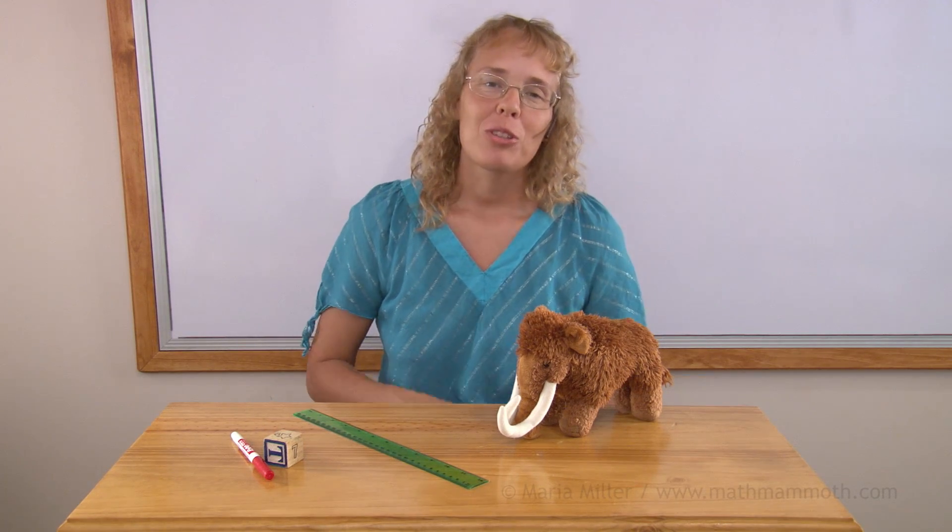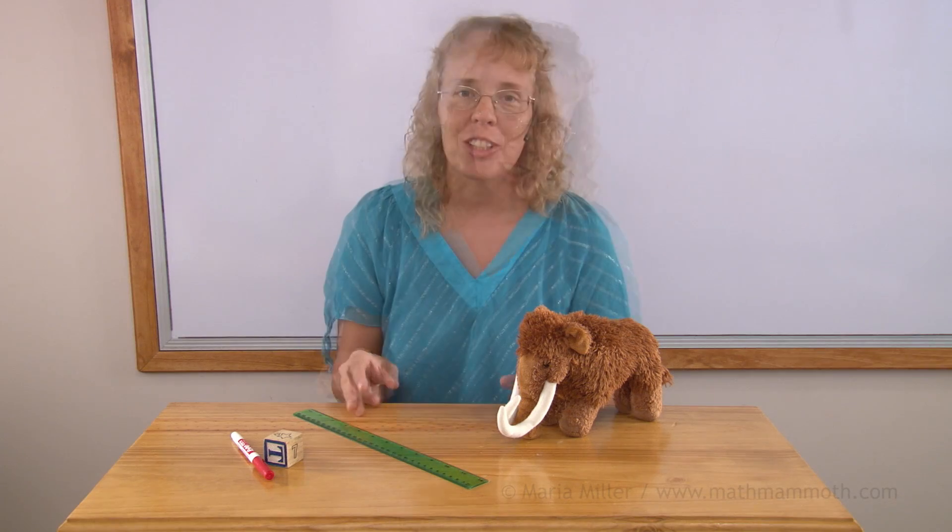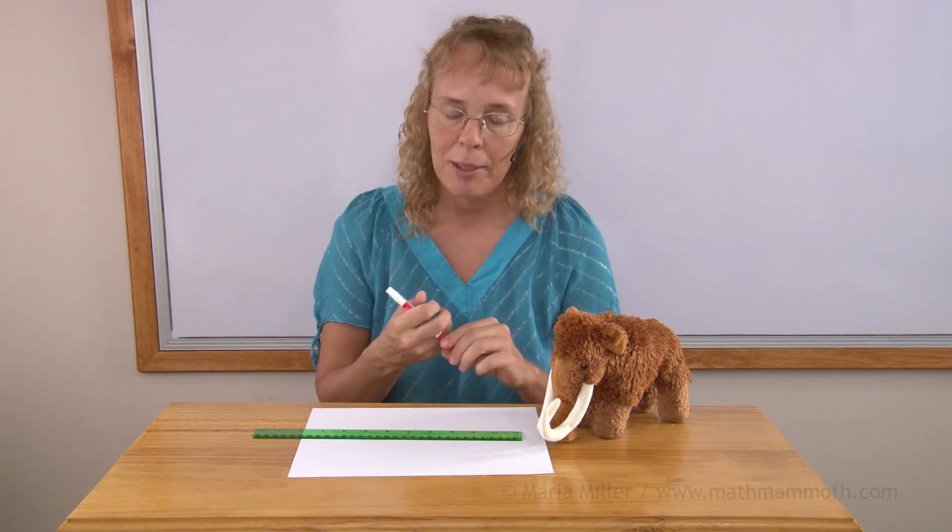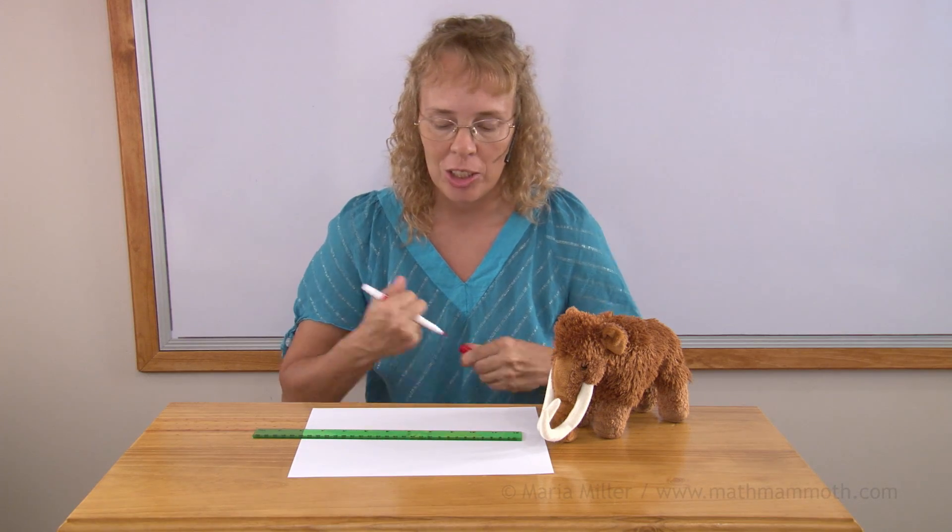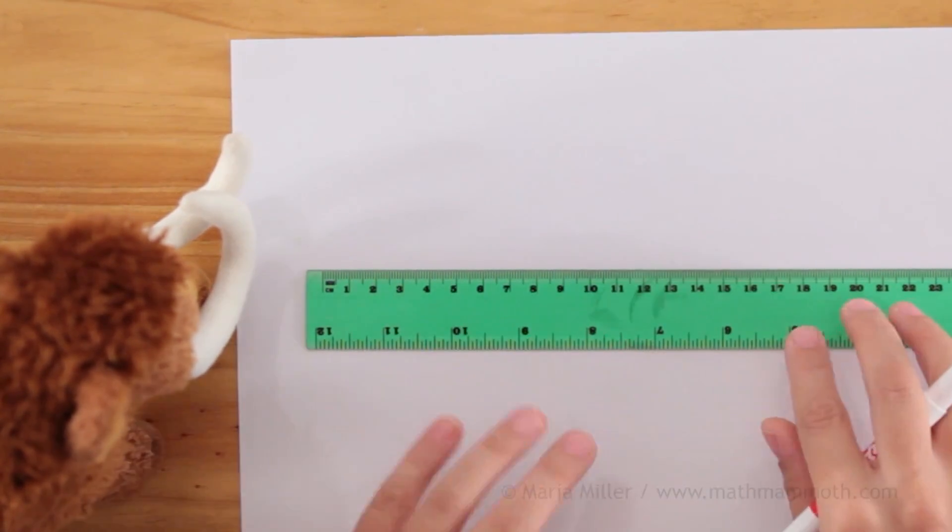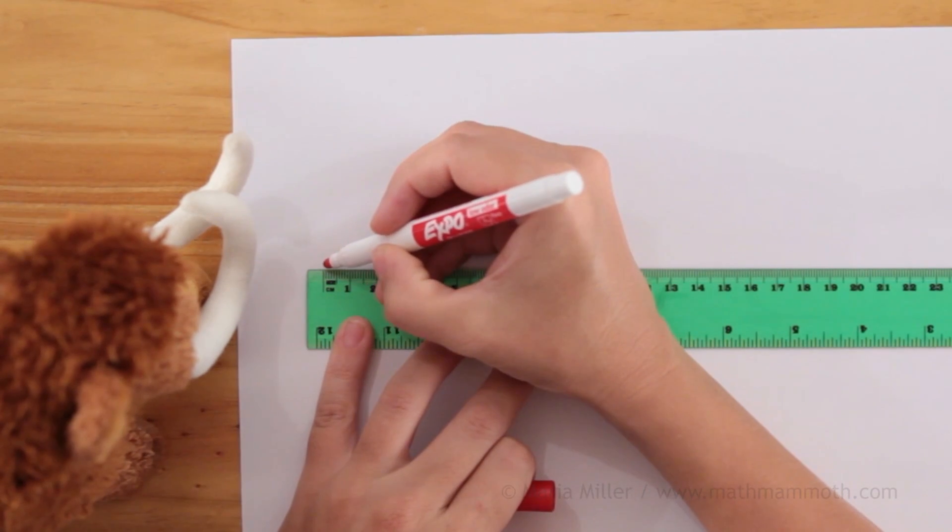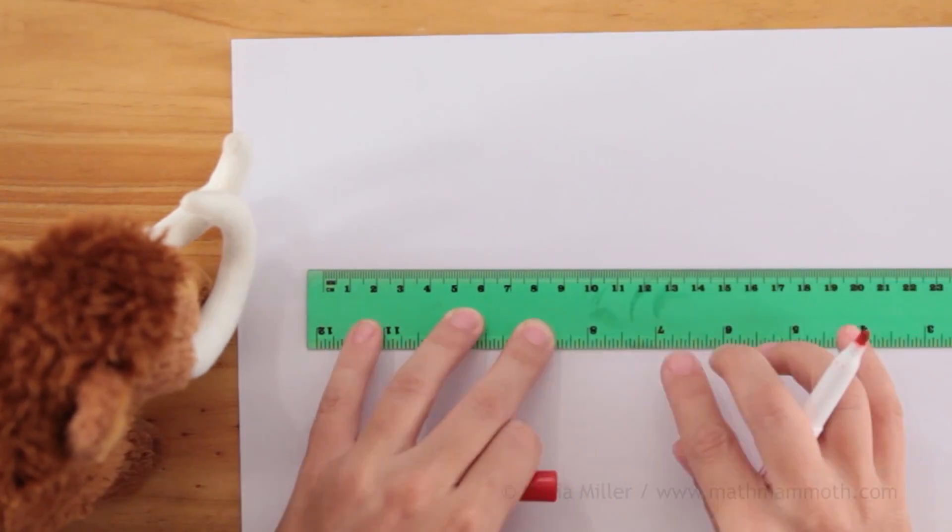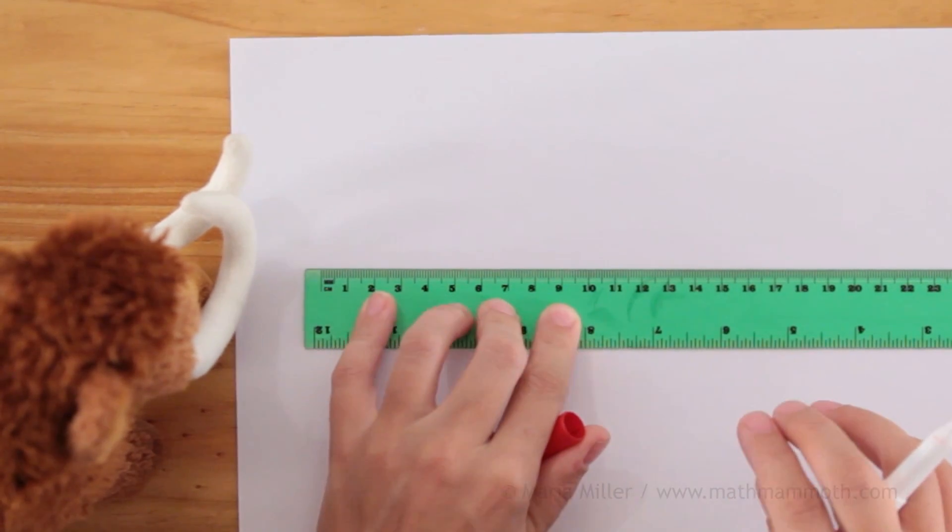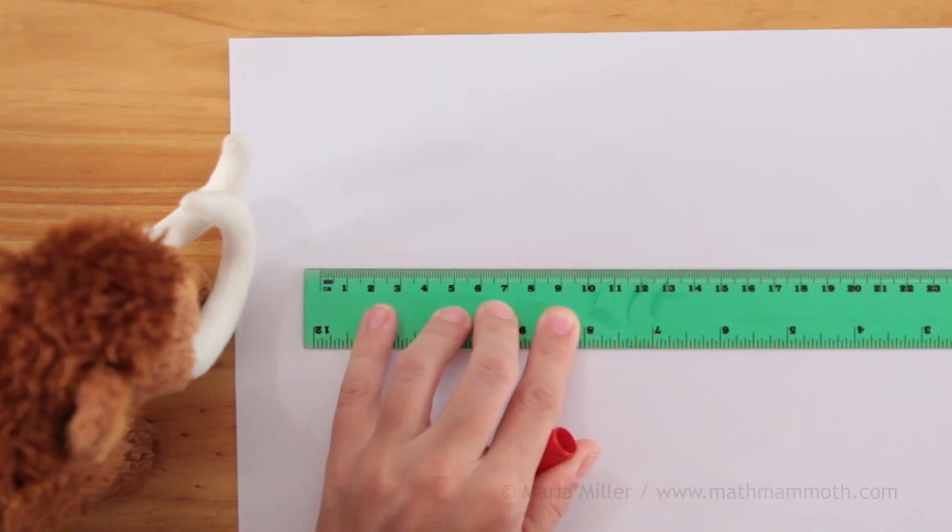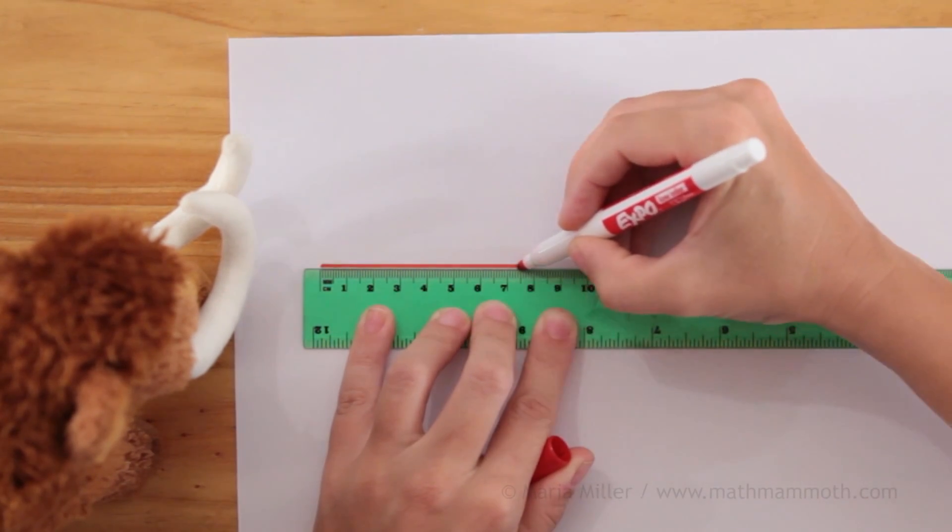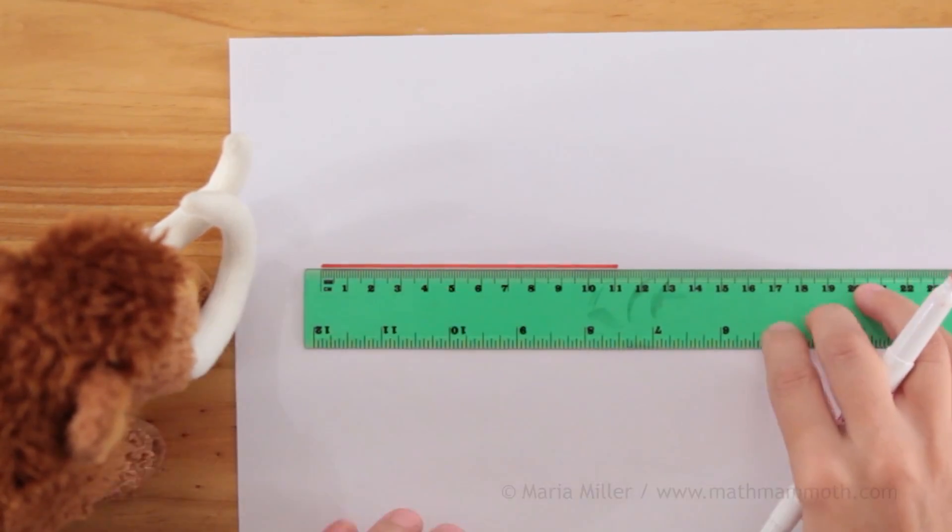Lastly, I will show you how to draw lines that are a certain length. Now I'm going to draw a line, let's say, 11 centimeters long. And this is pretty easy. All you need to do is start drawing at this zero point and draw up until 11 centimeters. But you need to hold down your ruler pretty firmly. Otherwise the ruler will start sliding like this. There we go. 11 centimeters.